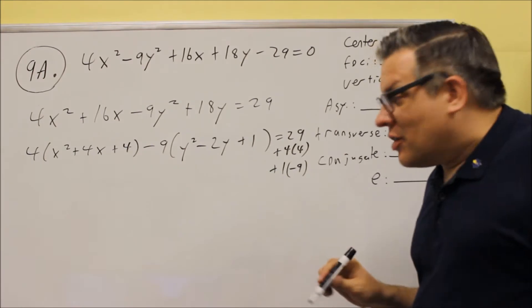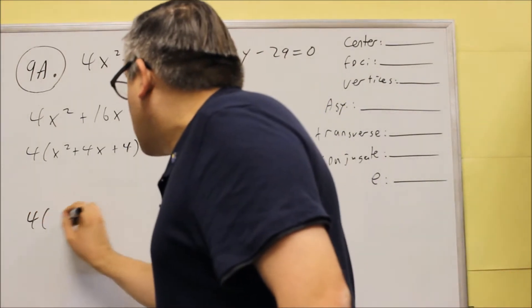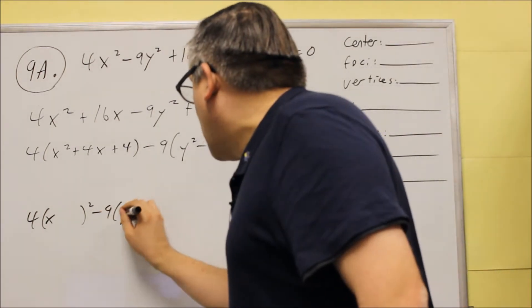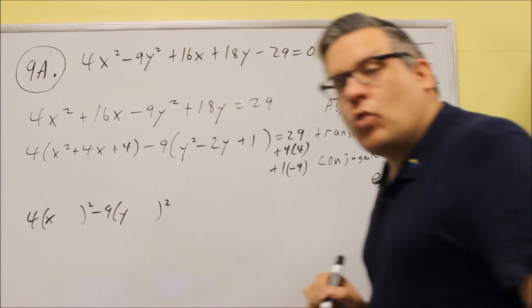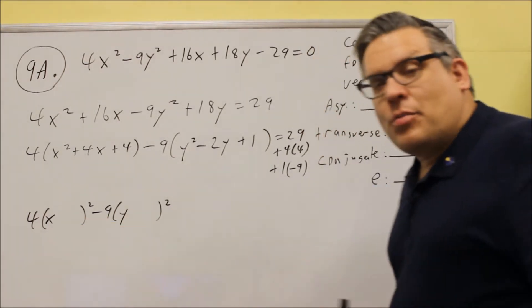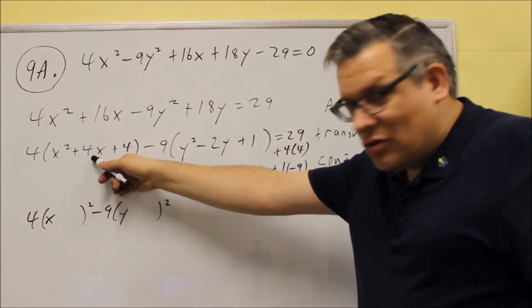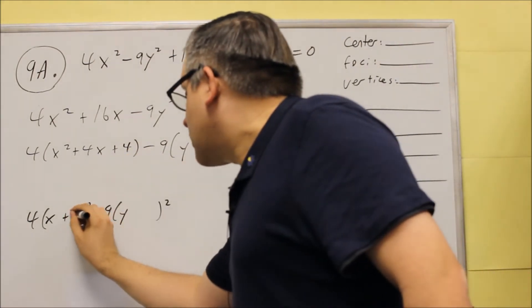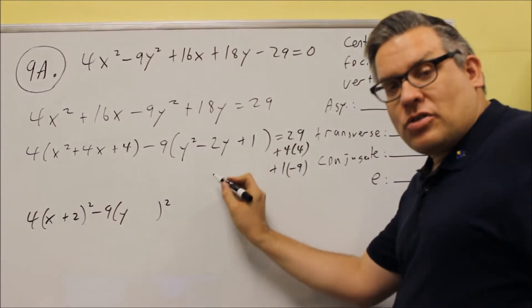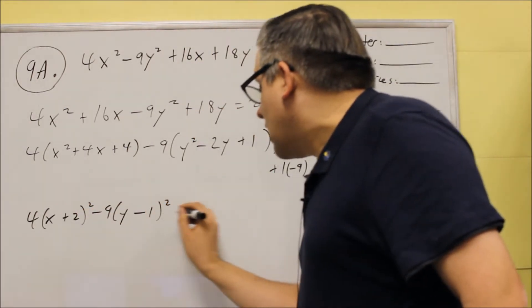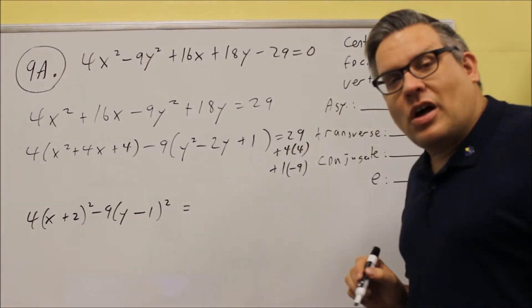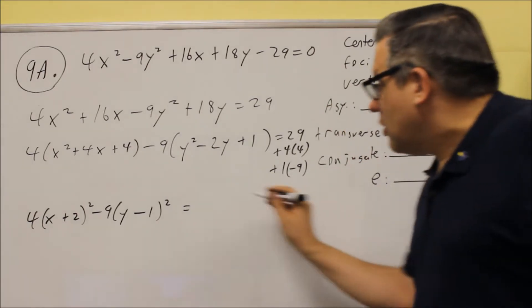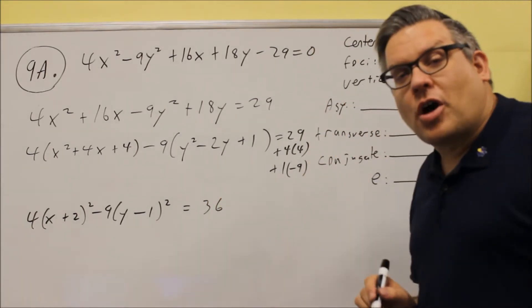We'll do all that. Next, we're going to factor each of these. So that's going to go into an x quantity squared and a y quantity squared. The number that goes inside the blank would be, if you take this number divided by 2, that's what goes inside here. So 4 divided by 2 is plus 2. Negative 2 divided by 2 is negative 1. That goes inside there. If you take all this and add it together, so 29 plus 16 minus 9, you should get 36 as a result.